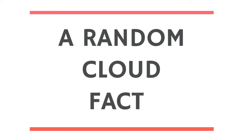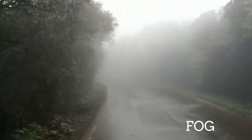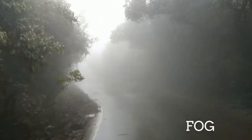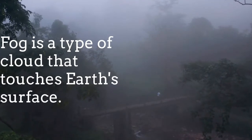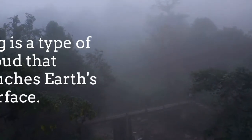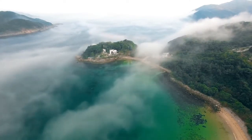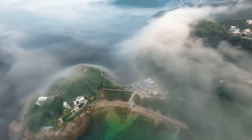Another random fact about clouds: this might come as a surprise, but you know fog — when it's hard to see outside and it kind of looks like clouds floating around on the ground? Well, fog is a type of cloud that touches earth's surface. If you ever wish to touch a cloud, just wait for a foggy day — dream come true. Fog is a type of cloud that touches earth's surface.